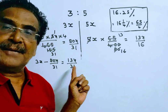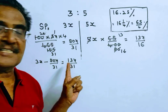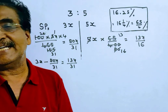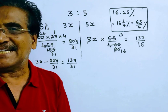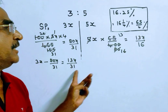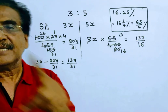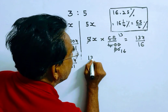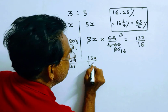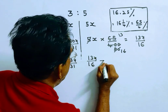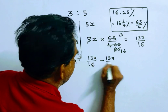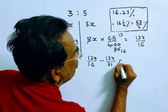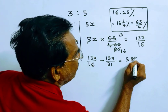This is the profit earned by the first salesman, and this is the profit earned by the second salesman. The difference between their profits is 585 rupees. So 13x/16 minus 13x/31 is equal to 585.